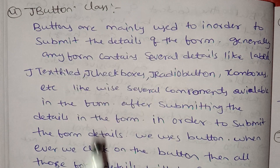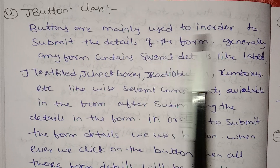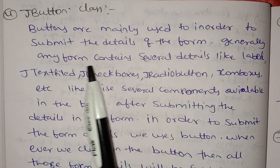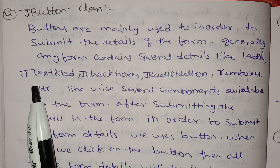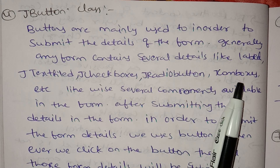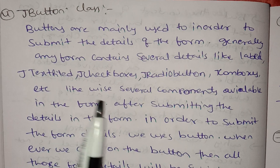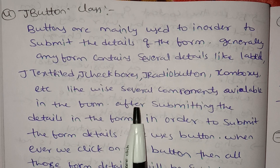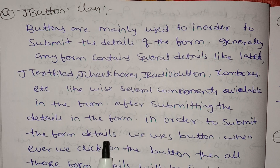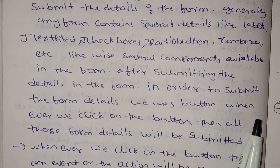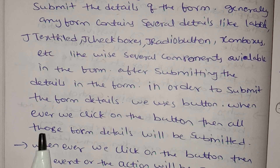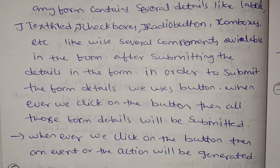Now, we use the JButton class. Buttons are mainly used in order to submit the details of a form. Generally, any form contains several components like labels, JTextFields, JCheckBoxes, JRadio buttons, combo boxes, etc. After entering all the details, in order to submit the form, we use a button. Whenever we click on the button, all those form details will be submitted.